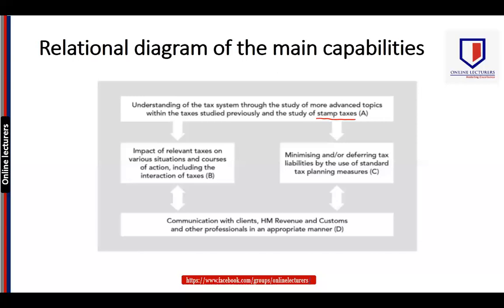As far as Part B of the syllabus is concerned, this is particularly very important: the impact of relevant taxes on various situations and courses of action, including the interaction of taxes — how types of tax are connected. For example, how CGT and IHT are connected, how a sole trader can be converted into an incorporated business and what the consequences would be, how you can transfer your value added tax registration, and so on.